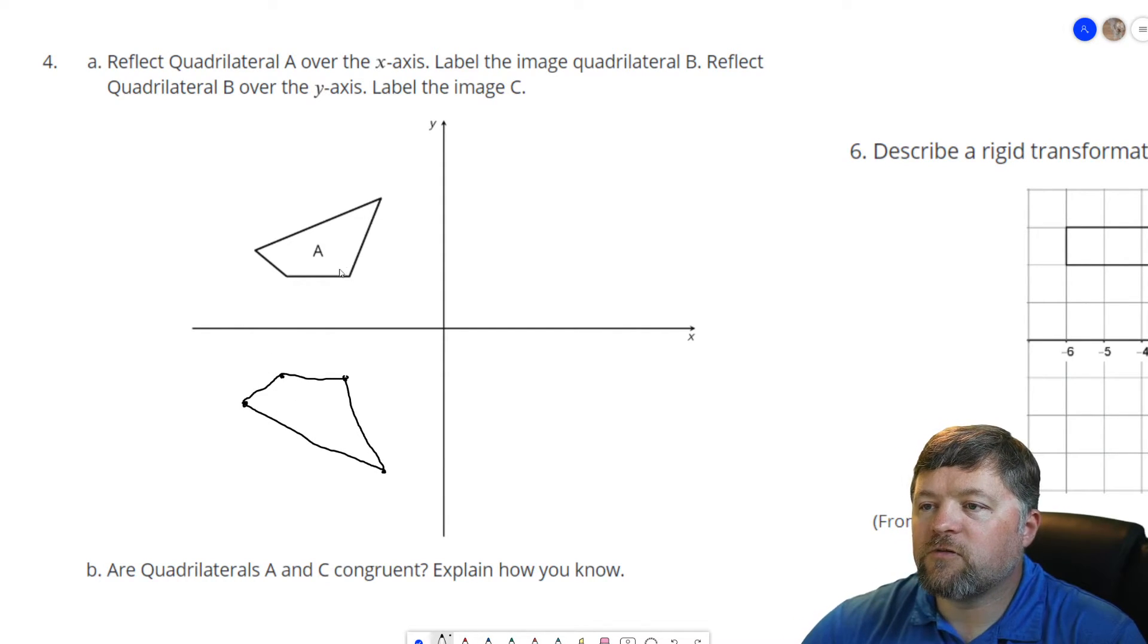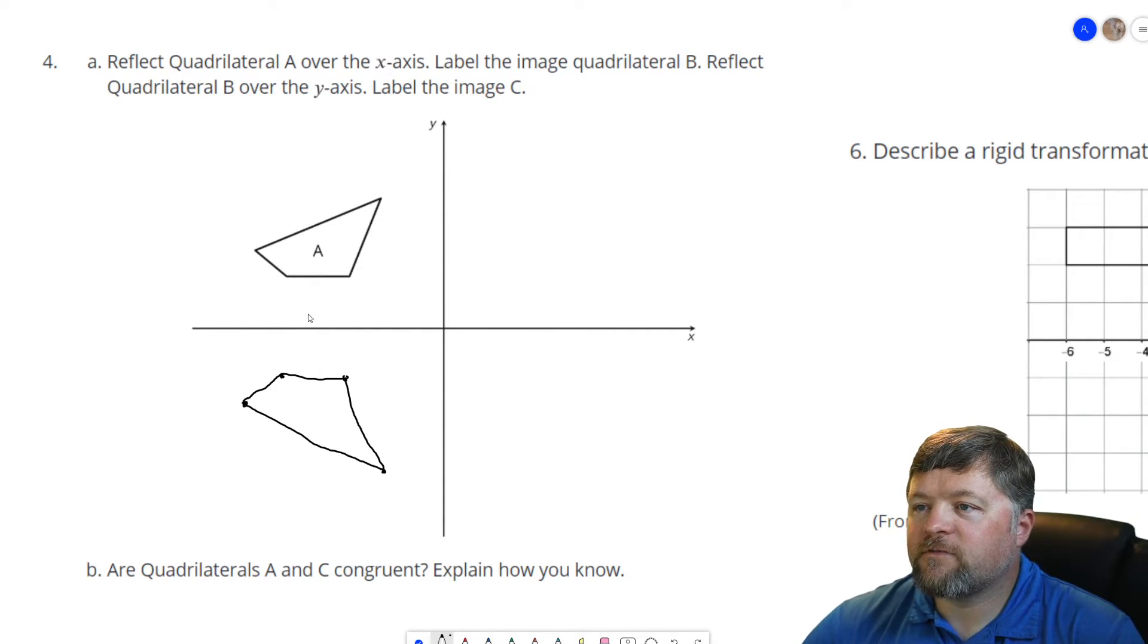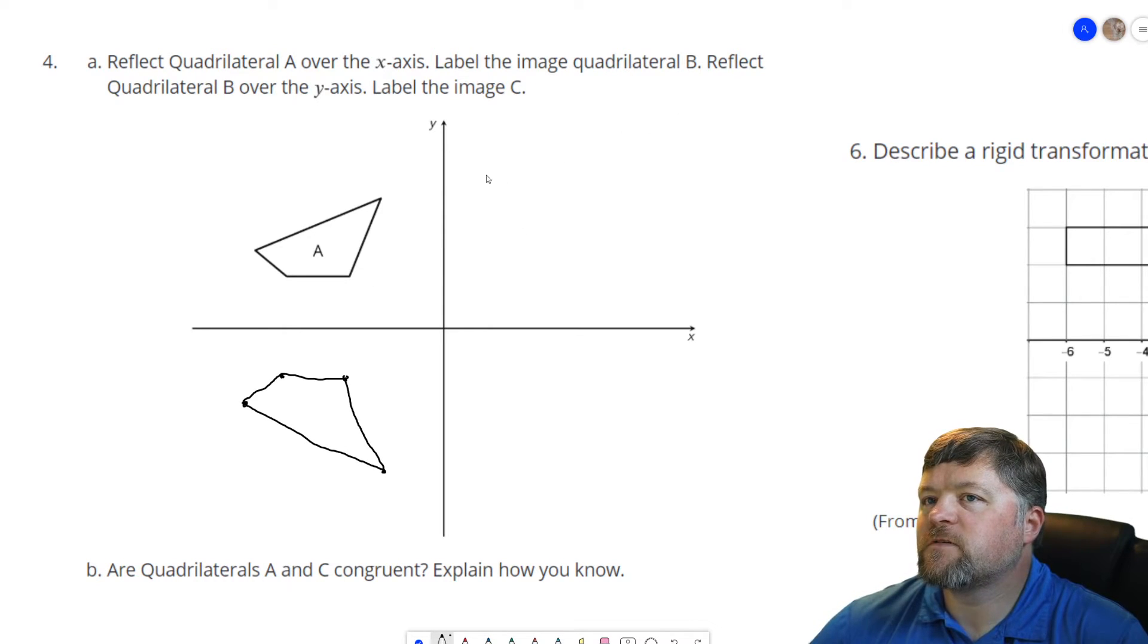You can do this better using a ruler than I can digitally on here. Or it would be even better if this were a coordinate grid so that we would have actual points to use. So this is now quadrilateral B.